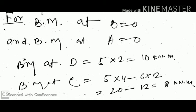For the bending moment diagram: BM at the support points B and A is equal to zero, because the bending moment about any simply supported end point equals zero. This was already discussed in previous lectures.